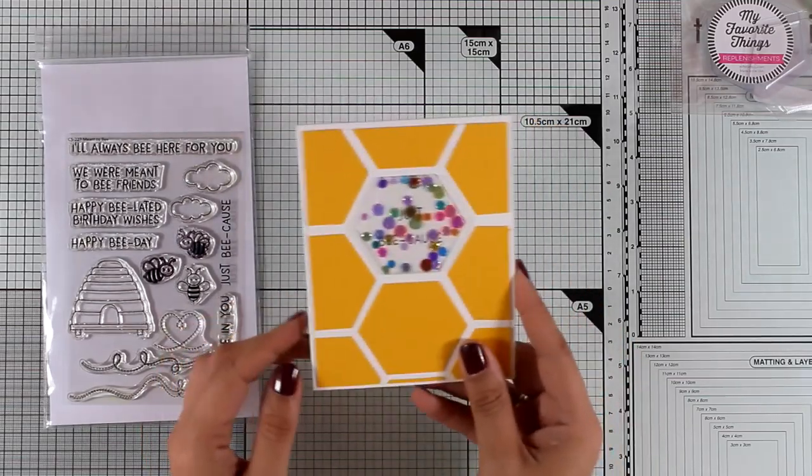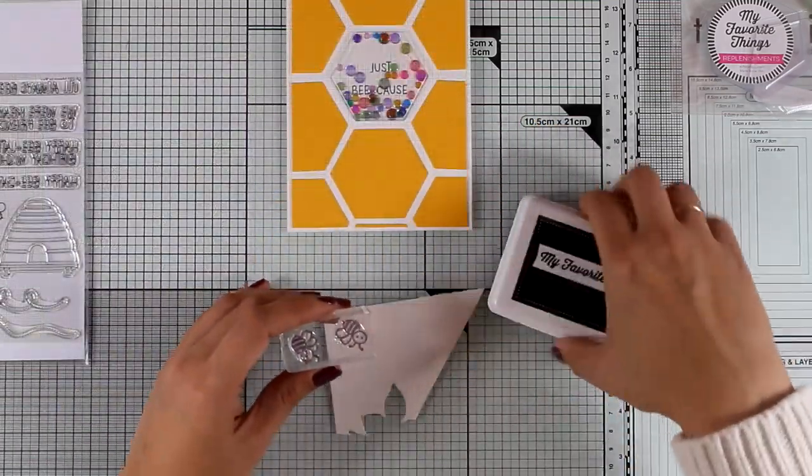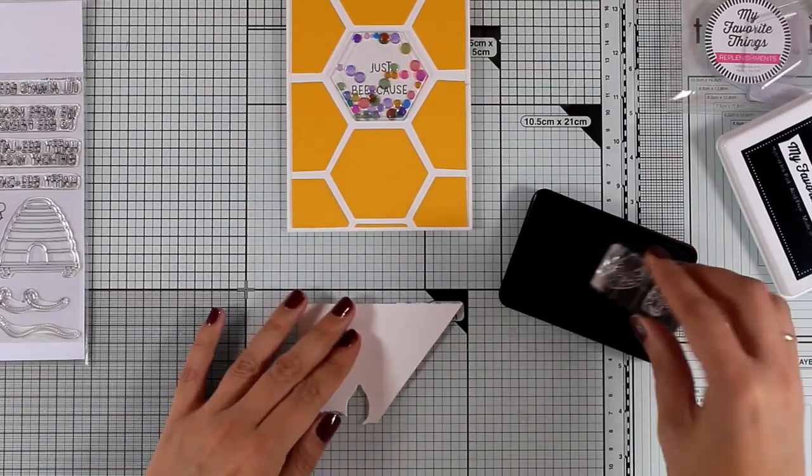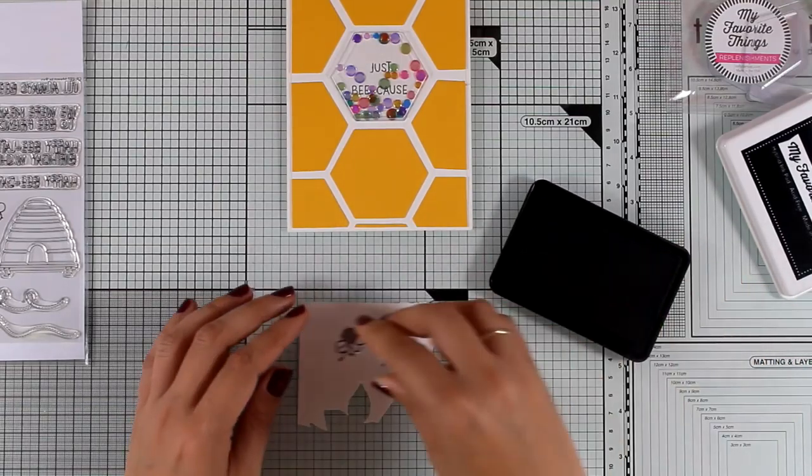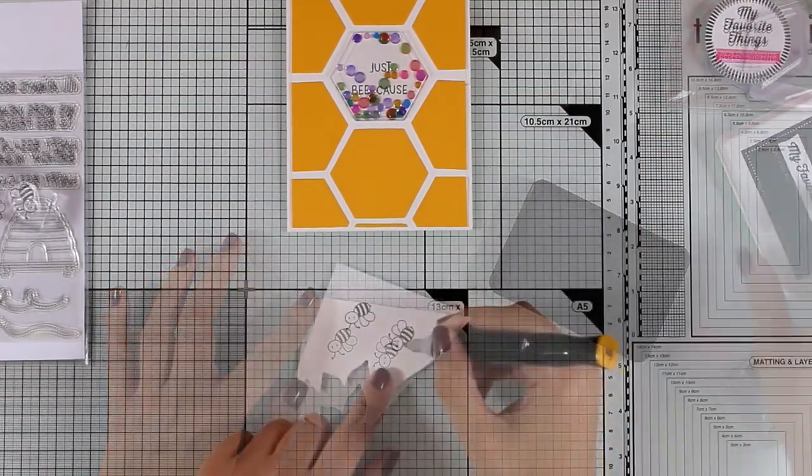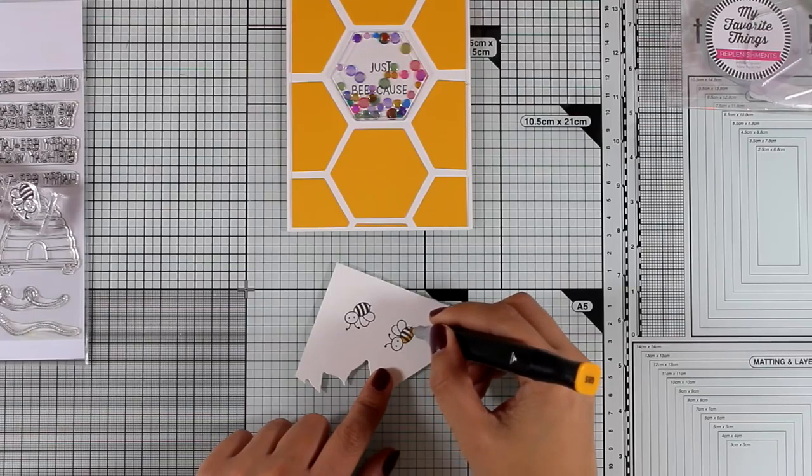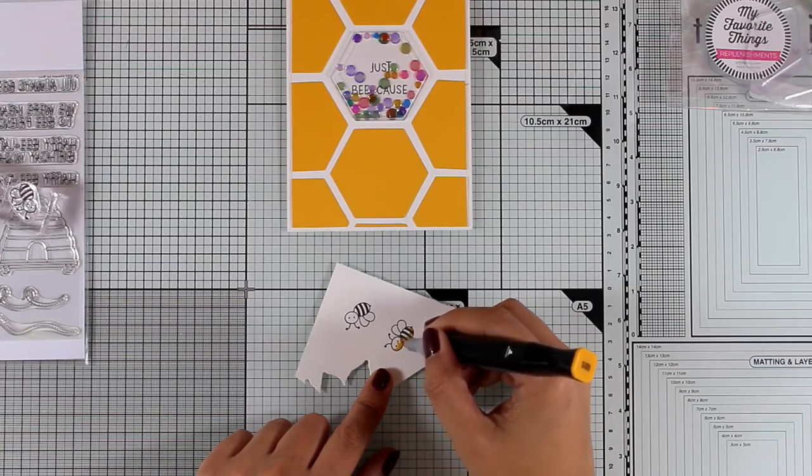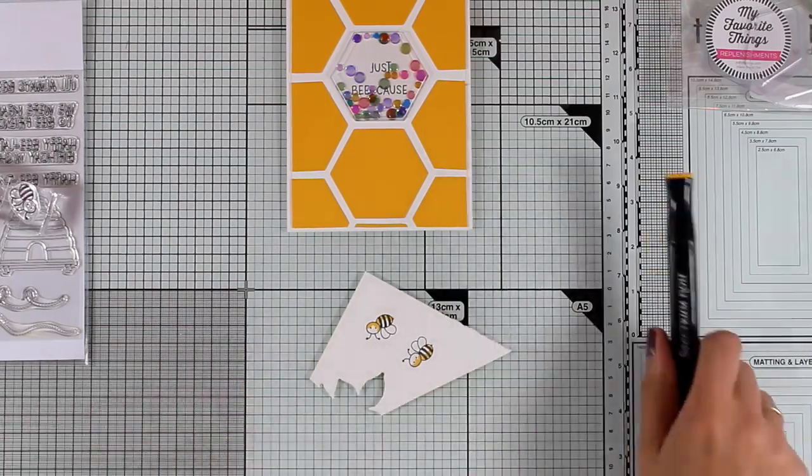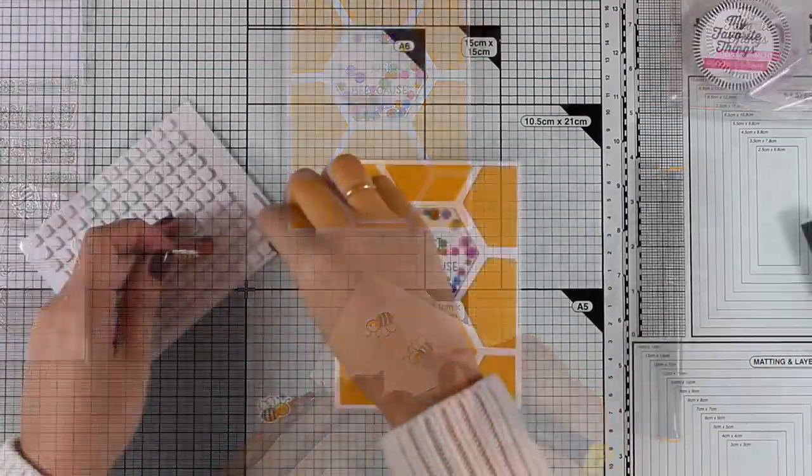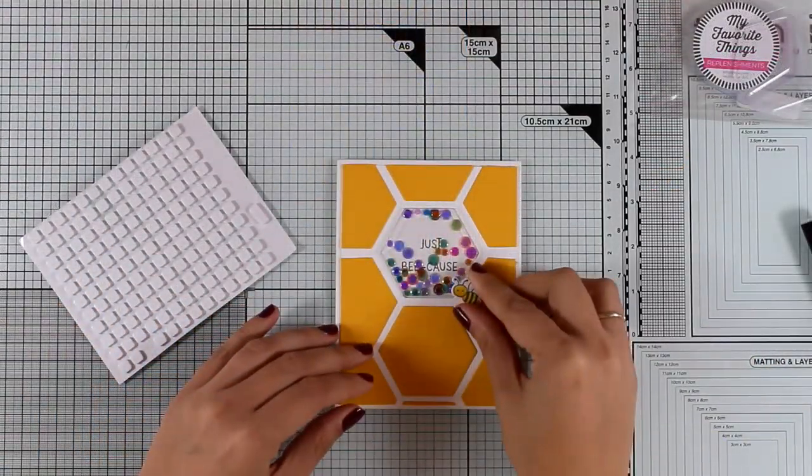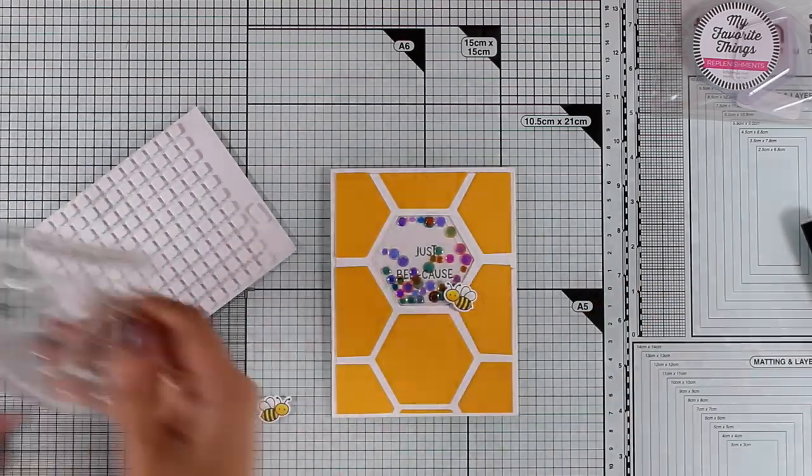Now I'm going to embellish it a little bit more by stamping a couple of bees from the same stamp set. I'm going to stamp them with black ink and then color them with my alcohol markers. There are matching dies available for this stamp set so I use those to cut out the bees and I'm going to stick them on top of my card using some tiny little foam squares at the back. So this is going to level up the bees with the level of the window.